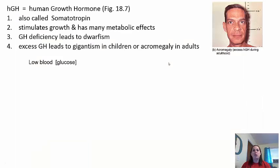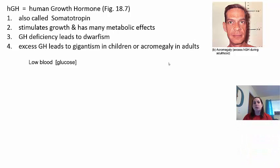Human growth hormone, also called somatotropin, stimulates growth and has many metabolic effects. It is released throughout life, not just during growth periods, because it helps with metabolism. A deficiency can lead to dwarfism. Excessive amounts in children cause gigantism. However, if excess occurs in adults — when levels were normal until adulthood then increased — it causes acromegaly, where the person doesn't grow taller but bones thicken and develop distinct characteristics.